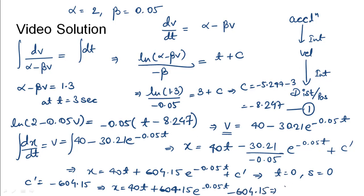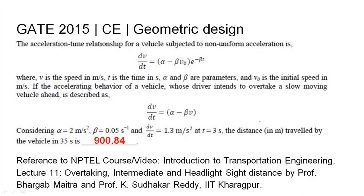Now we can substitute time t as 35 seconds. Using this, the value of x of 35 will come out to be 900.84 meters. So the distance travelled by the vehicle in 35 seconds is 900.84 meters. The relevant NPTEL reference has been listed.